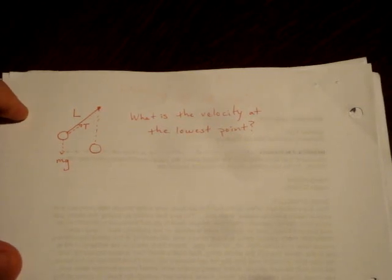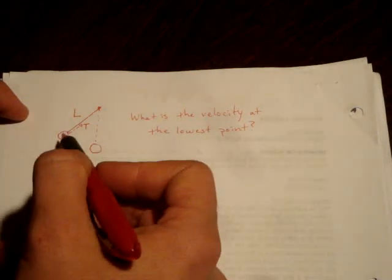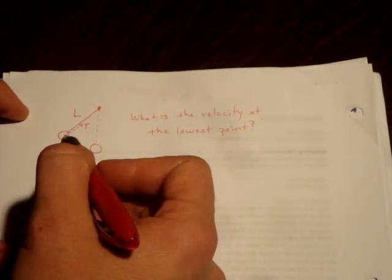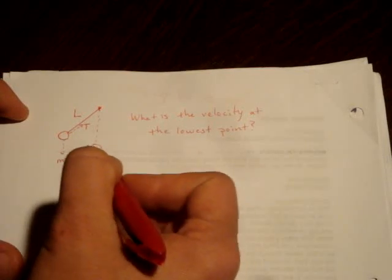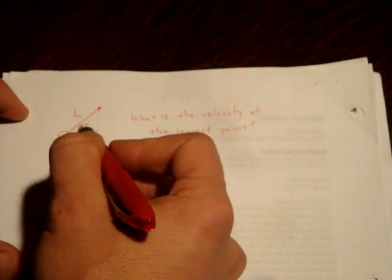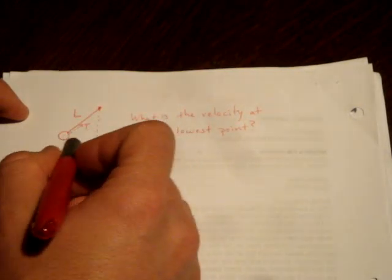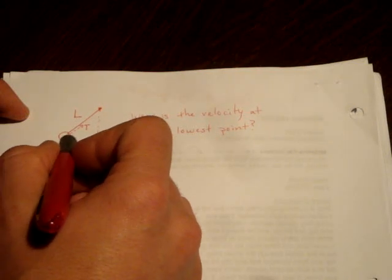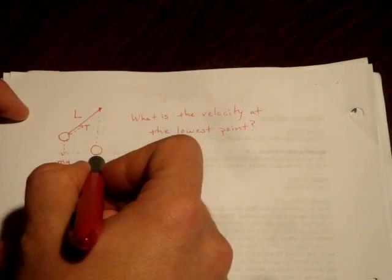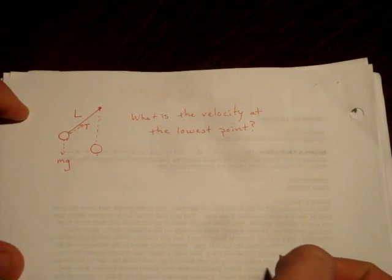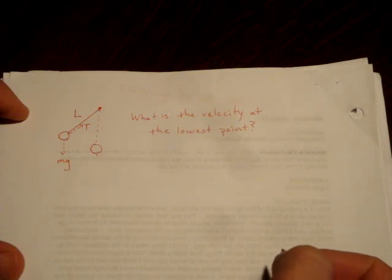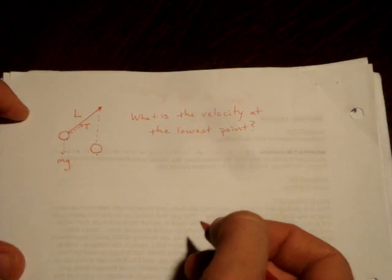The problem we run into if we try to solve this using Newton's laws is that we'd have to write a Newton's law for every position of this ball along the path, because the direction of the tension force is constantly changing as it moves from its high point down to its low point in the middle. So it's extremely complicated using Newton's second law, but what we can do is say something about the energy in this situation.